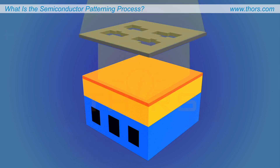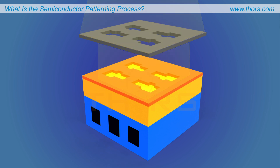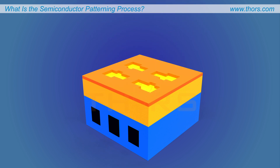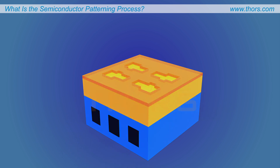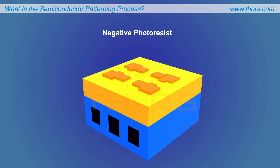The photoresist-coated substrate is then exposed to light through the reticle. Developing the photoresist by dissolving the exposed area results in a positive photoresist. Developing the photoresist by dissolving the unexposed area results in a negative photoresist.